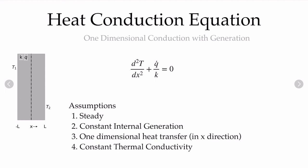We'll look at the figure on the left, where we have Dirichlet conditions — a known temperature at the minus L boundary and a known temperature at the plus L boundary. x equals 0 occurs at the center of our system, with a distance L of material in the positive x direction and distance minus L in the negative x direction. x equals 0 is the symmetry line, and the thermal conductivity and volumetric generation are both constant.